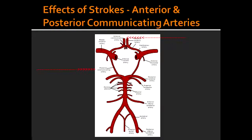Effects of stroke at the communicating arteries. One thing to note about anterior and posterior communicating arteries is that the lesions are typically aneurysms — they're not strokes. They are saccular berry aneurysms and they can cause impingement on the cranial nerves.